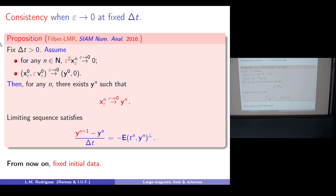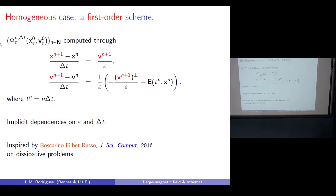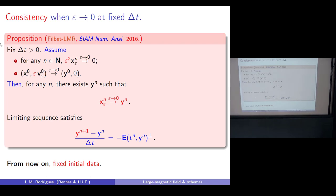There are two regimes to check. First, fix time and take delta t to zero: you recover the continuous equations. Second, fix delta t and take epsilon to zero. In this regime, if x is not going to zero, the first equation tells you v goes to zero; and then v over epsilon also goes to zero. Substituting into the first equation, you recover the parallel scheme for the limiting equation.